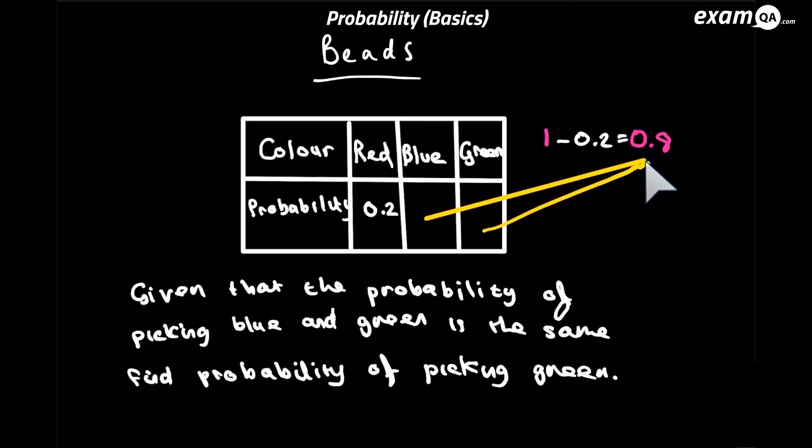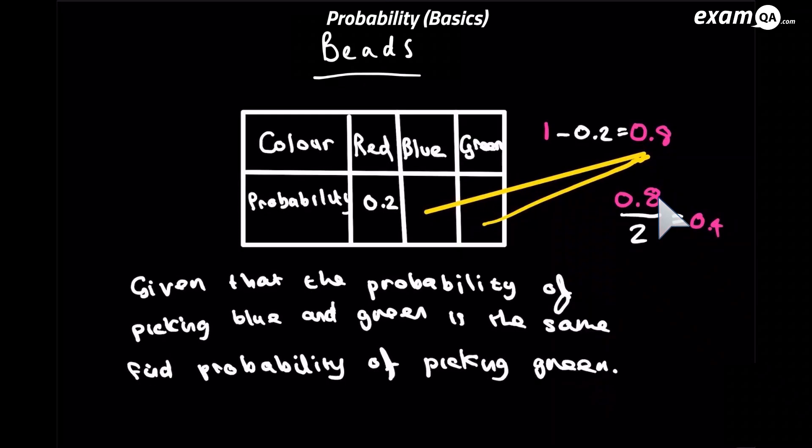Now, the key thing here is in the question it said that the probability of picking a blue and a green is the same. So we can simply just divide that 0.8 by 2. And so 0.8 divided by 2 gives us 0.4. So the answer to this question is the probability of picking a green is simply 0.4.